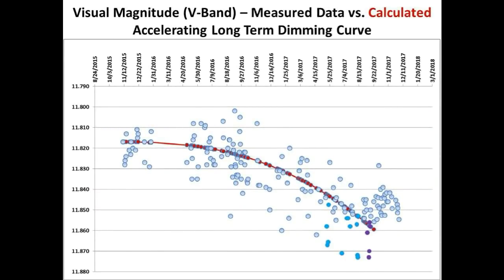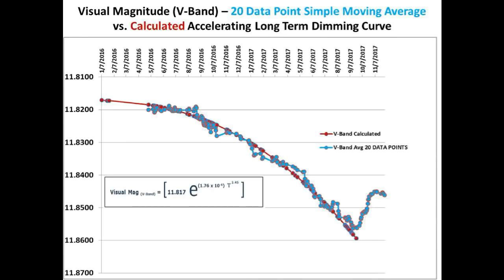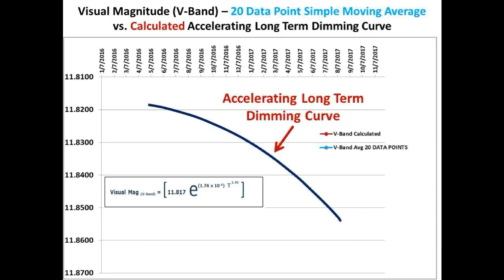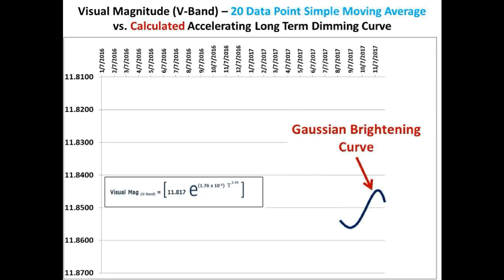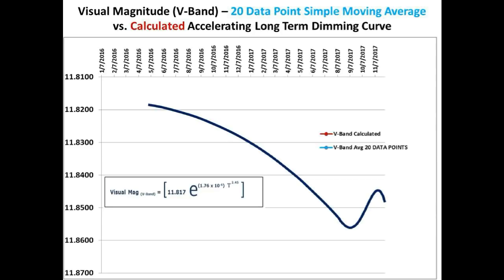If we take the 20 data point simple moving average of this scatter plot, we get the light blue line, which represents the long-term flux trend of Tabby Star. The best fit curve over these 25 months is the dark blue curve, which consists of an accelerating long-term dimming curve profile and an incomplete Gaussian brightening curve profile. Using the 20 data point simple moving average as a way to track the long-term trend, you don't have to guess as to the shape of its nominal curve.